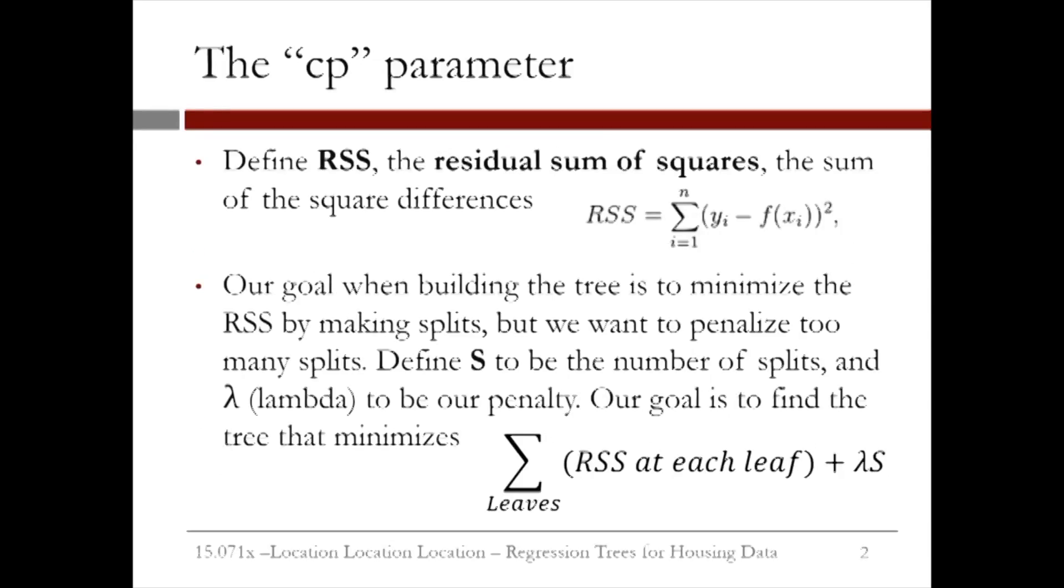Let us define RSS to be the residual sum of squares, also known as the sum of square differences. Our goal when building the tree is to minimize the RSS by making splits, but we want to penalize having too many splits now. Define S to be the number of splits and lambda to be our penalty. Our new goal is to find a tree that minimizes the sum of the RSS at each leaf plus lambda times S for the number of splits.